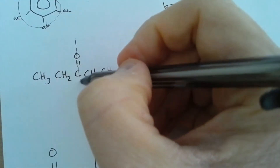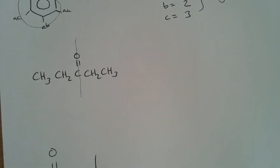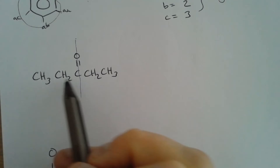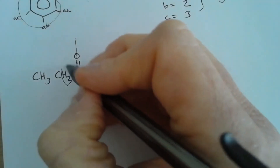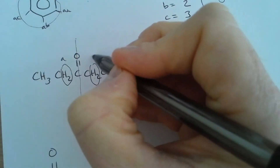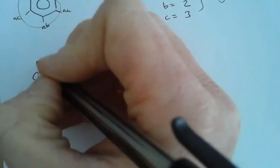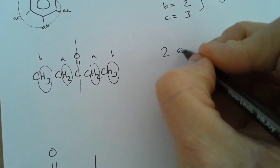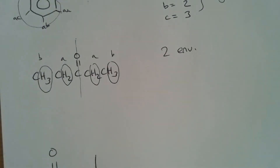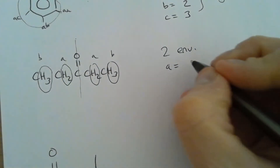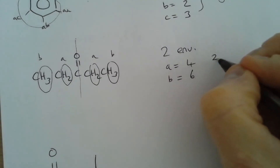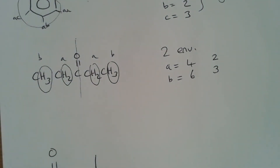In this next example there is a mirror line of symmetry through the molecule. This means the hydrogen environment on one side is equivalent to the corresponding environment on the other side. As a result, there are only two environments: A and B. Environment A has an integral of four and environment B has an integral of six, though we'd often see those reduced to a two-to-three ratio.